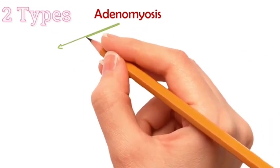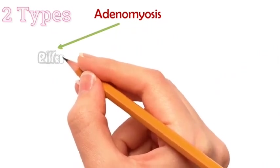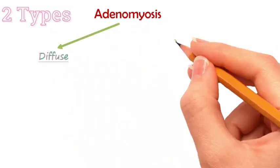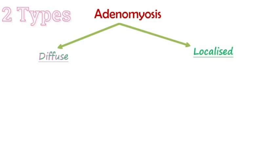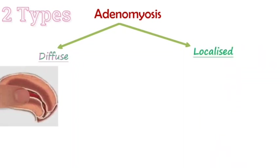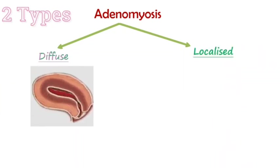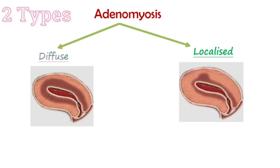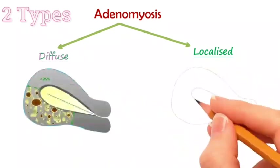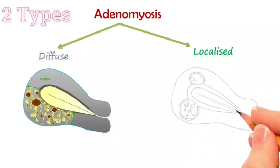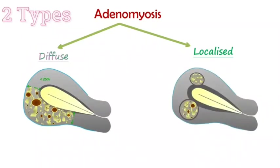Adenomyosis is of two types: diffuse adenomyosis and localized adenomyosis. In diffuse adenomyosis, the endometrial tissue is present diffusely in the myometrium, while in localized adenomyosis, a circumscribed focus of endometrial tissue in the myometrium is seen.